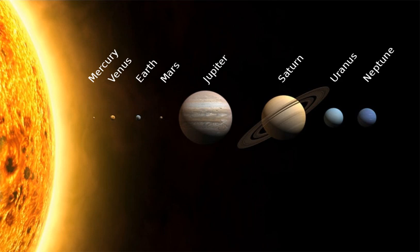Section 7: Outer Solar System. The outer region of the solar system is home to the giant planets and their large moons. The centaurs and many short-period comets also orbit in this region. Due to their greater distance from the Sun, the solid objects in the outer solar system contain a higher proportion of volatiles such as water, ammonia, and methane than those of the inner solar system because the lower temperatures allow these compounds to remain solid.